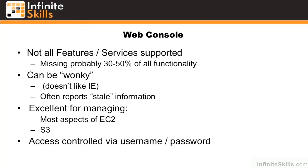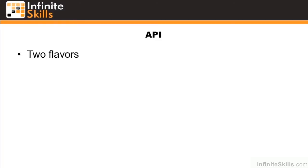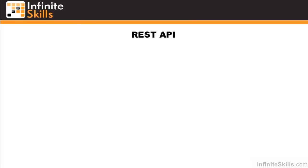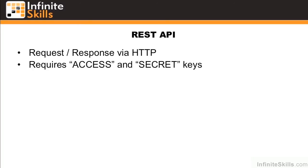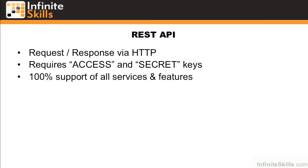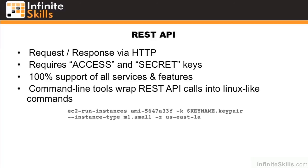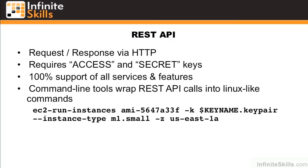Access to the web console is controlled via a username-password combination. The API comes in two flavors. The most popular is the REST API, but there's also a SOAP API that's mainly legacy and AWS is phasing out support of this. The REST API is done via request-response over HTTP, requires access and secret keys, and supports 100% of all the services and features available in AWS. Command line tools also wrap the REST API calls into Linux-like commands, such as this, to spin up a single instance.